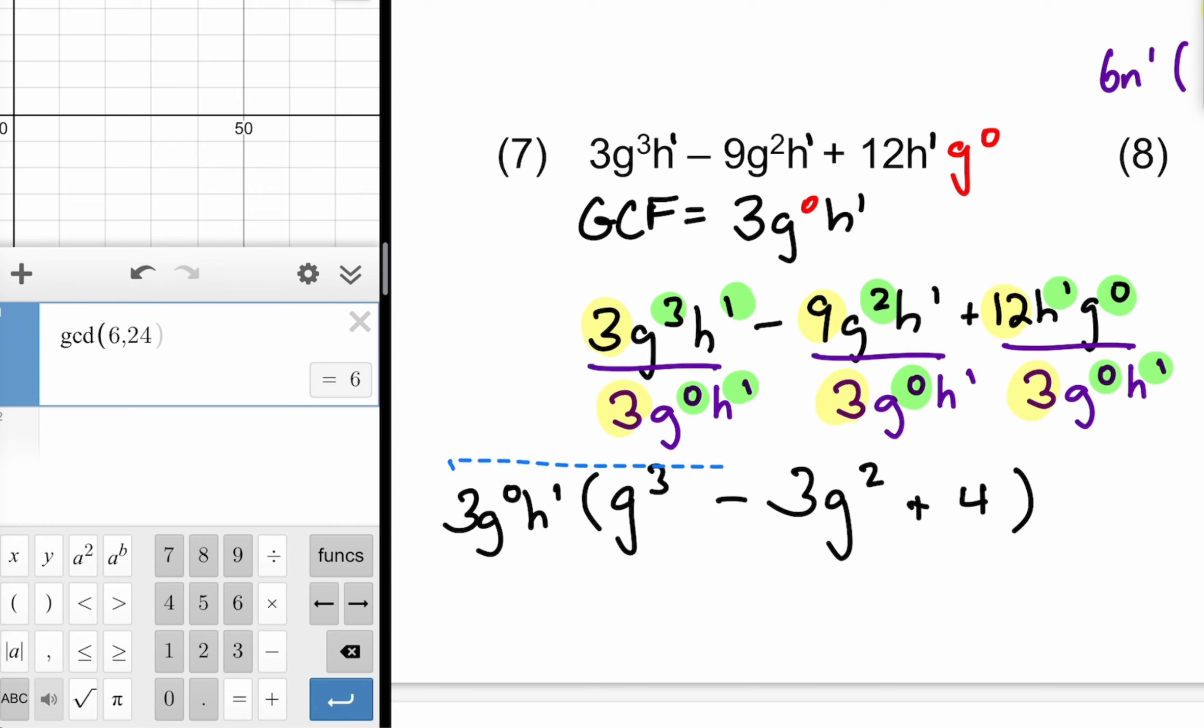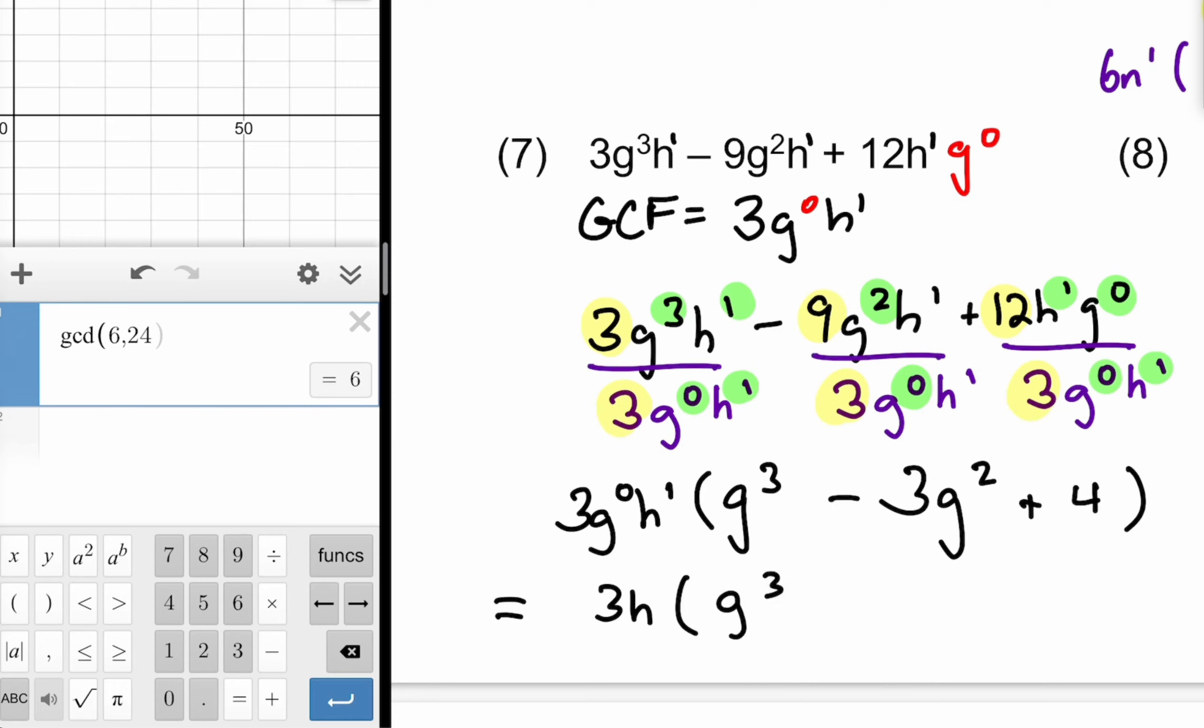And so this would be a factored form except I probably want to clean it up because you know how those multiple choice questions work. Give you an answer in whatever form makes sense to whoever wrote the question. So it might not look exactly the same as you have it on paper. So 3G⁰. G to the zeroth is 1. This is really 3H. G³ minus 3G² plus 4. And that would be our final for that.